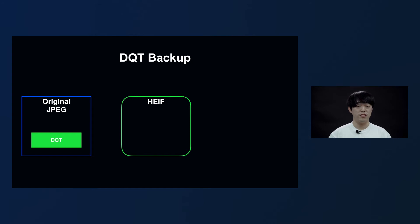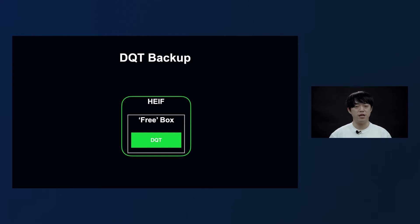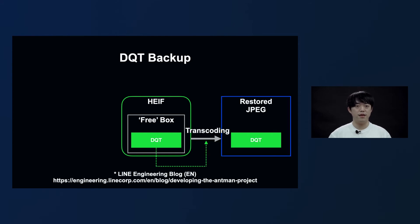Now I'll briefly explain how we use the DQT in the JPEG. In order to use the DQT, we create a backup of the DQT in the JPEG when converting the original JPEG file to a HEIF file. We create a free box in the HEIF that will not have any effect on decoding, and after storing the DQT of the original JPEG in the free box, we complete the conversion to the HEIF file. When a request comes in from a device that does not support HEIF, we use the DQT stored in the HEIF to recover the JPEG file. The assumption we made about the DQT was proven through a test, and you can read the details in the LINE engineering blog.